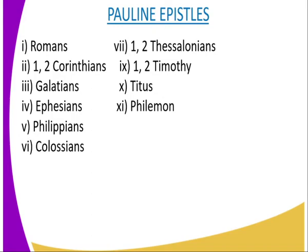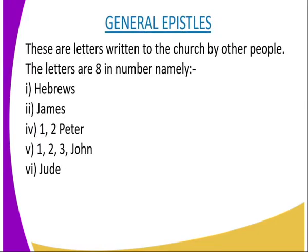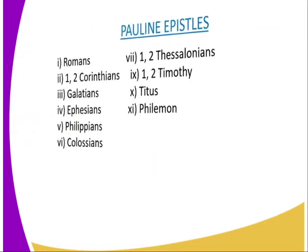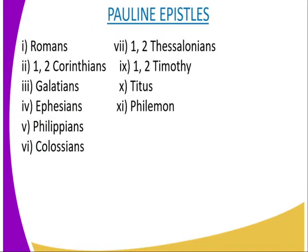The other category is the Epistles. We have two categories of Epistles: the Pauline Epistles and the General Epistles. The Pauline Epistles are: Romans, 1st and 2nd Corinthians, Galatians, Ephesians, Philippians, Colossians, 1st and 2nd Thessalonians, 1st and 2nd Timothy, Titus, and Philemon.